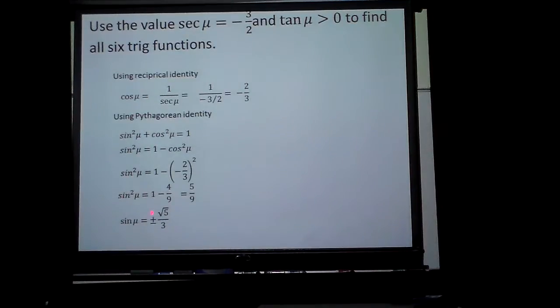I don't know whether sine is positive or negative square root of 5 over 3. But I do know this, because secant is negative and tangent is positive. Where is secant negative? Secant is negative in quadrants 2 and 3, and tangent is positive in quadrants 2 and 4.